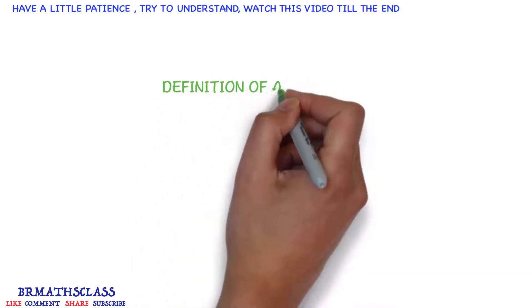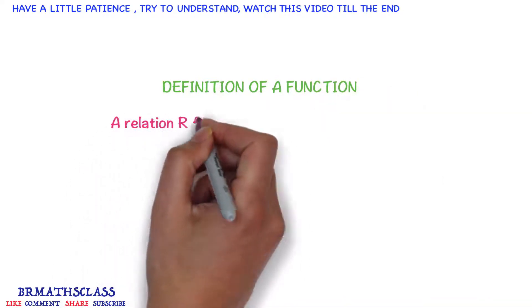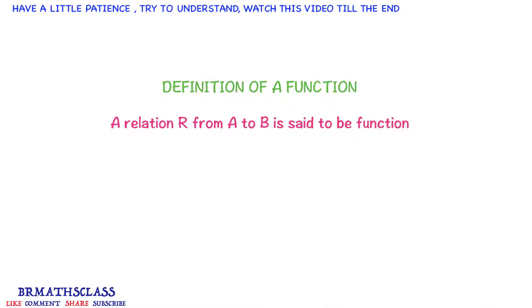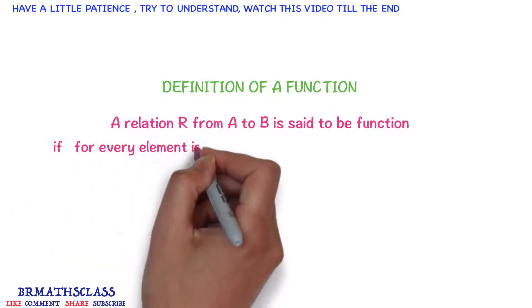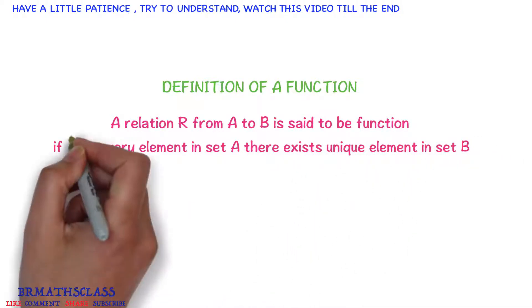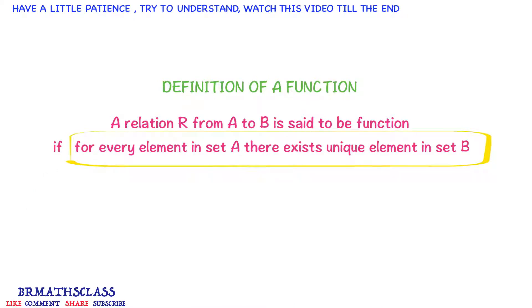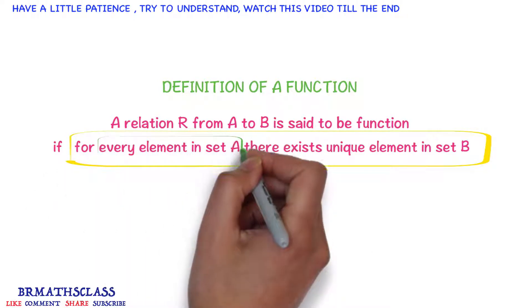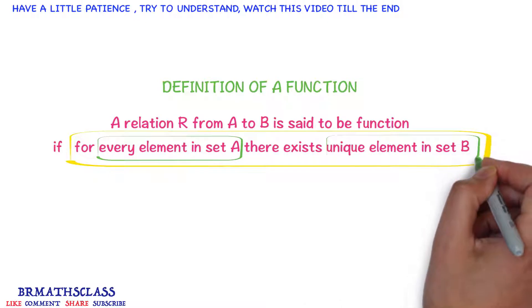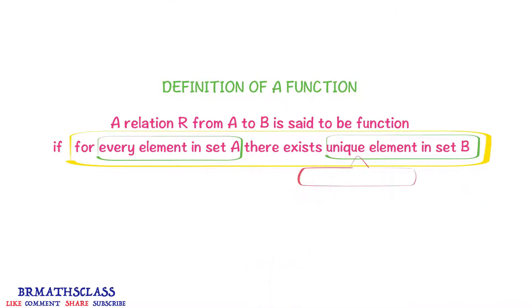Definition of a function: A relation r from a to b is said to be a function if for every element in set a, there exists a unique element in set b. If the relation r satisfies this condition, then we say r is a function. Unique element means only one element.